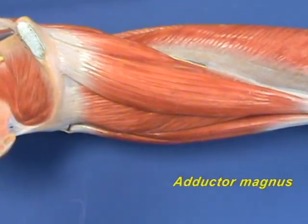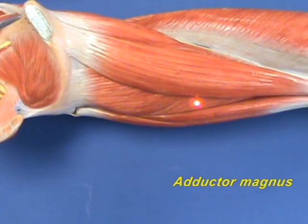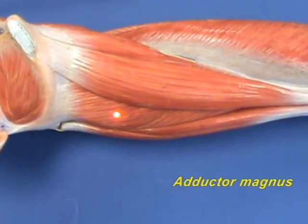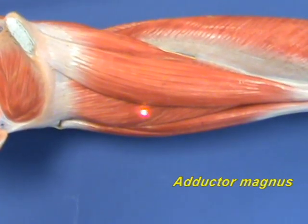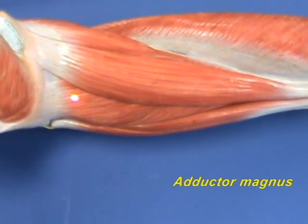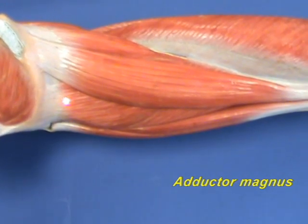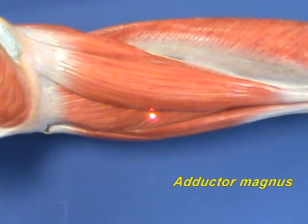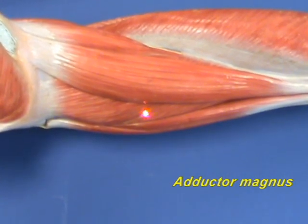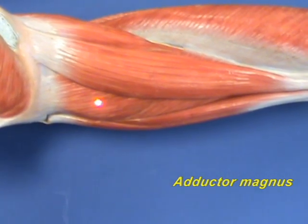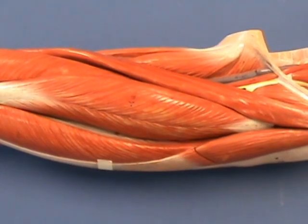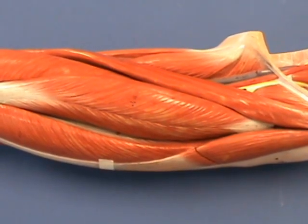The adductor magnus muscle is, as the name implies, an adductor of the thigh at the hip joint. This muscle can also medially rotate the thigh at the hip joint. Now we are looking at the anterior aspect of the thigh.